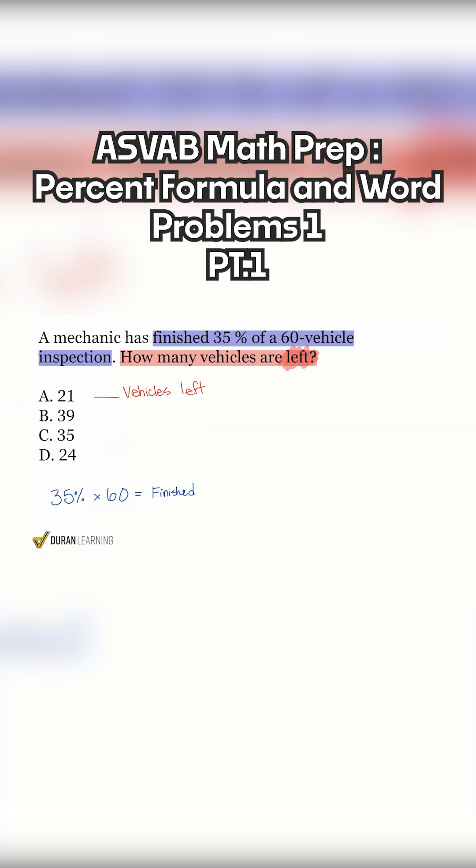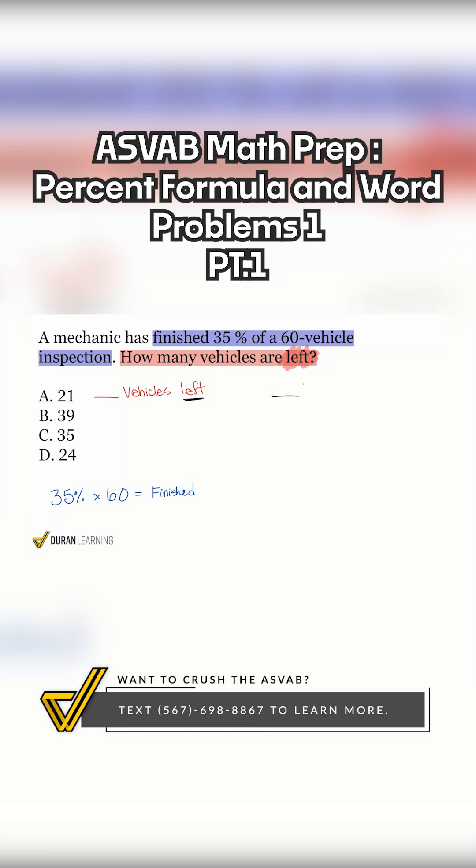Let me get a formula that will give me the correct answer which will be representing the vehicles left. So the percentage that is left times the 60 vehicles will give me the number of vehicles left.